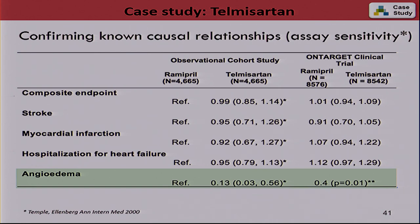Going back to what Bob Temple taught me: if you have a non-inferiority study showing a null finding, there are many dials you can turn — adding a little more measurement error in exposure or outcome pushes everything towards the null. So we have an assay sensitivity marker: angioedema, a known causal effect of the ACE inhibitor. We could demonstrate that telmisartan, the ARB, had a lower risk for angioedema than the ACE inhibitor, as expected from the RCT. So you can do these positive or negative control endpoints.